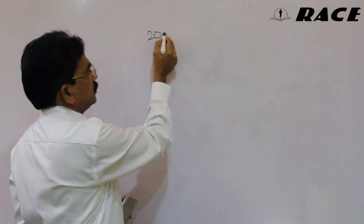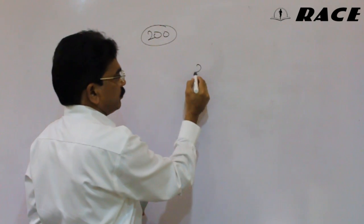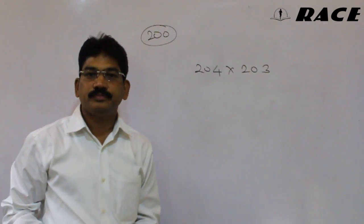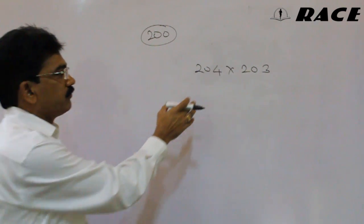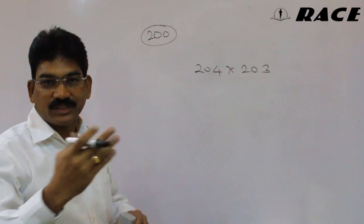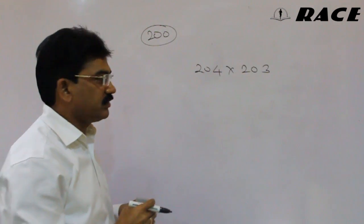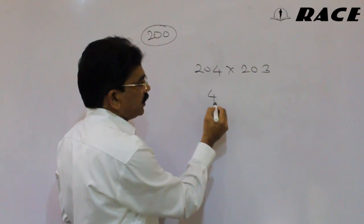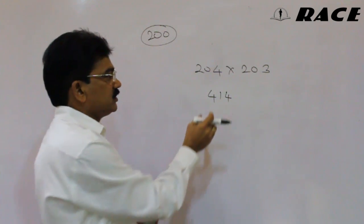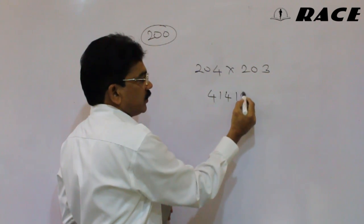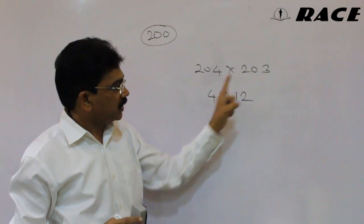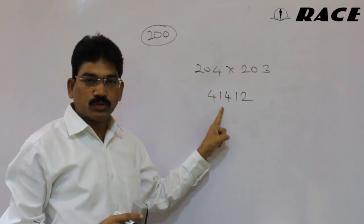Now we see multiplication techniques for numbers near 200. Take an example: 204 into 203. Here 204 plus 3 is 207. Double it: 207 doubled is 414. This is the first part of the answer. Then the second part is as usual: 4 into 3 is 12. So 41412 is our answer. So 204 into 203 is 41412.